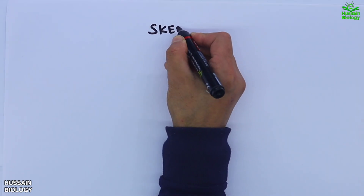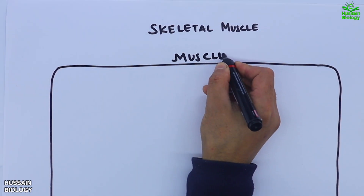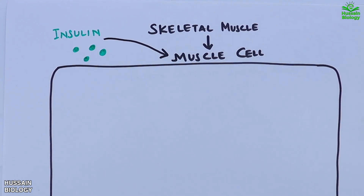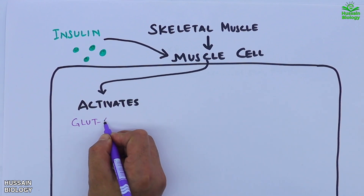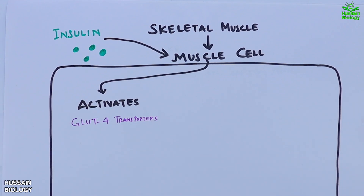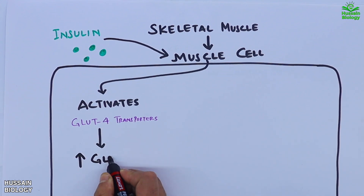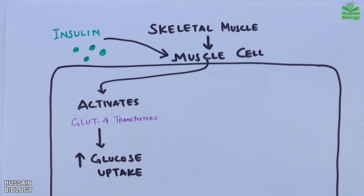Now getting to skeletal muscle. Insulin interacts with skeletal muscle cells by binding to the receptors on the muscle cell membrane. Once insulin is present it triggers several key processes. First, we have the activation of GLUT4 transporters — specialized proteins that move to the cell membrane, allowing glucose molecules to enter the muscle cell from the bloodstream, significantly increasing glucose uptake.